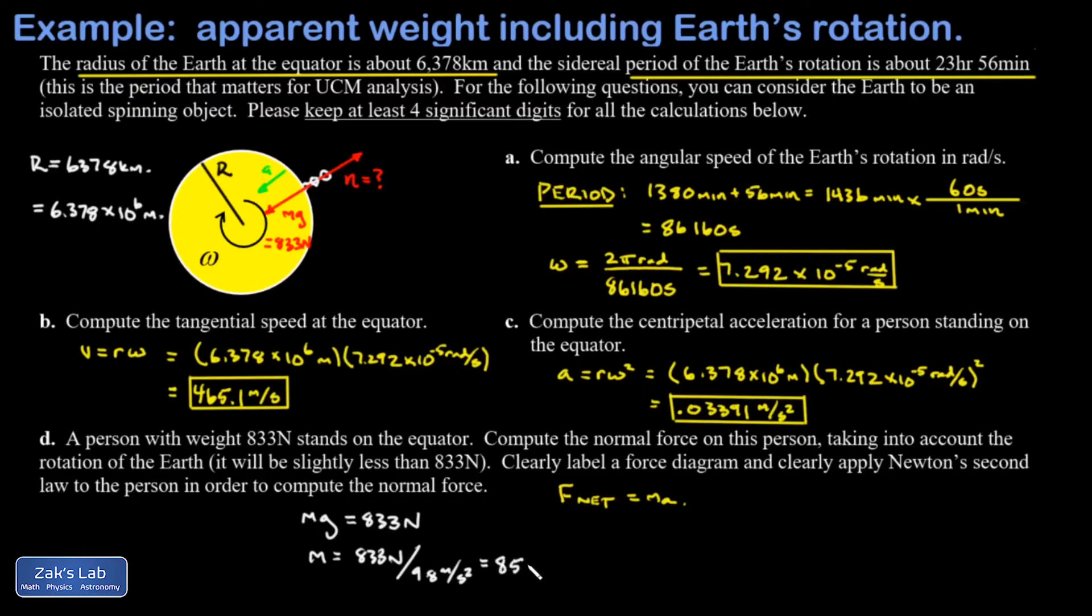When we analyze F_net, we have to choose which direction is positive for the coordinate system. I'm going to make toward the center of the Earth the positive direction because that's the way the acceleration points. That means this 833 newtons counts as positive, the normal force takes a minus sign, and then my mass is 85 kilograms and my centripetal acceleration is 0.03391 meters per second squared.